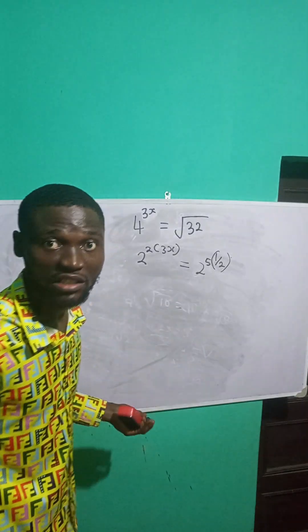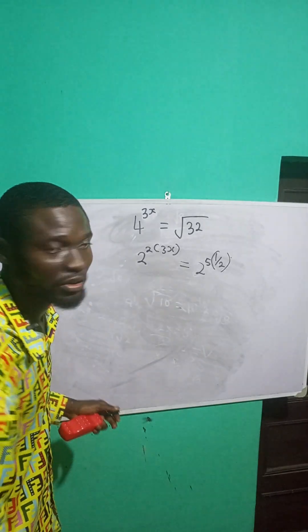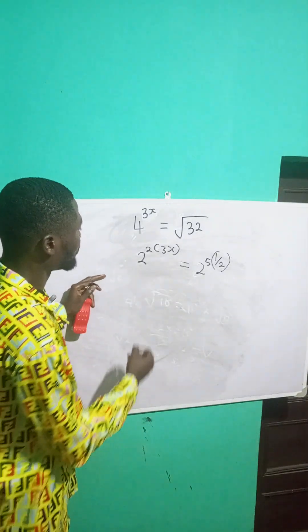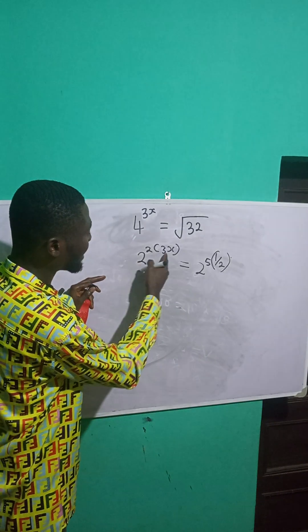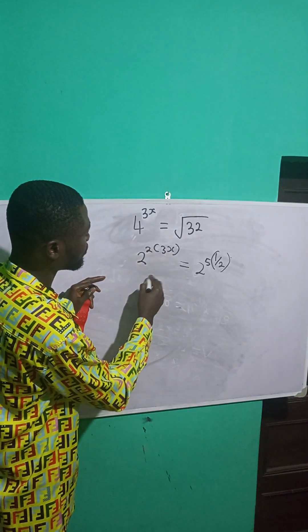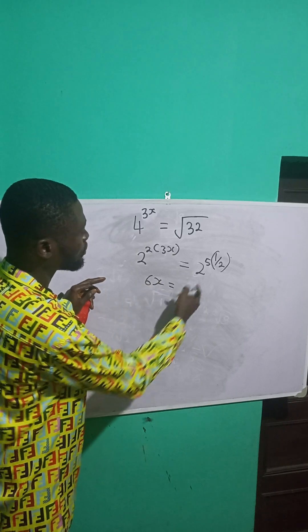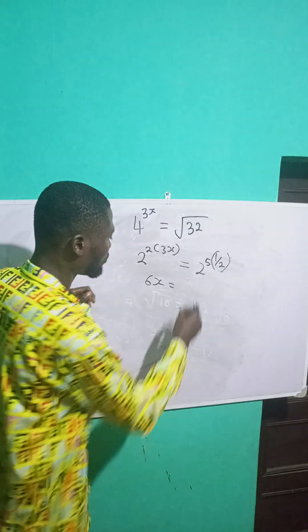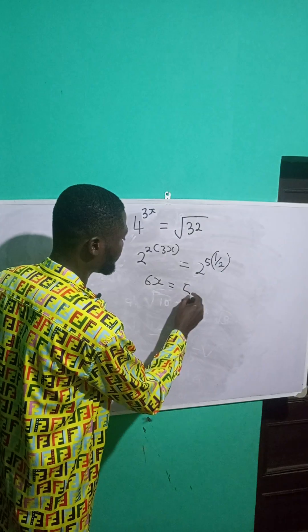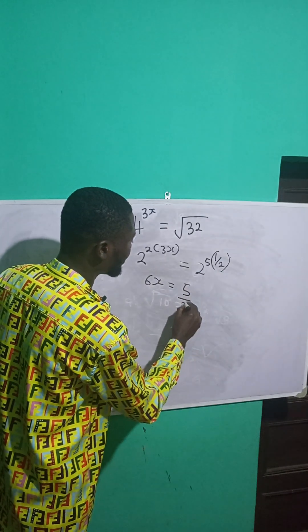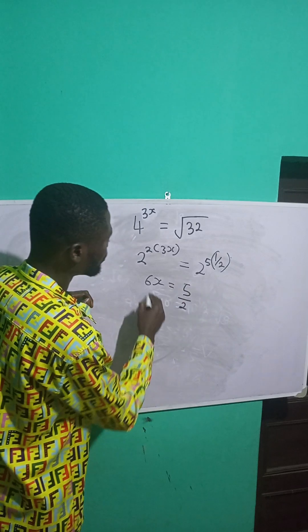I will equate the exponents. So 2 times 3x is 6x, which is equal to 5 times 1 over 2, which is 5 over 2.